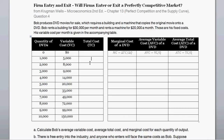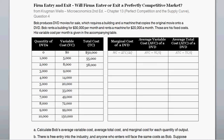The first thing we need to do is calculate total cost. Total cost is just fixed cost — $50,000 — plus variable cost. At zero units produced there's zero variable cost, so total cost is just $50,000. At 1,000 units produced with a variable cost of $5,000, the total cost is $55,000. We fill out the rest of the column the same way, adding variable cost to the fixed cost.